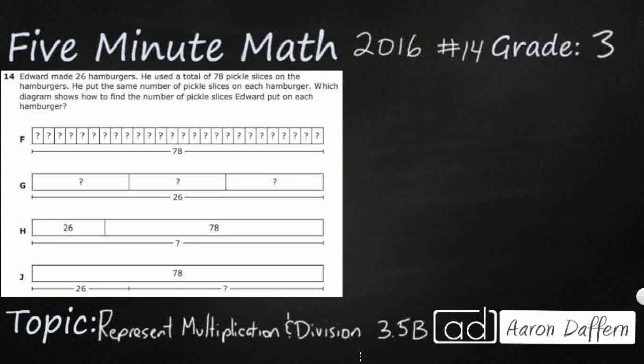So we have an interesting problem here because if you look at our answer selections F, G, H, and J, we're not actually looking for a number. We're looking for a representation or a diagram. Let's see if we can figure this out.